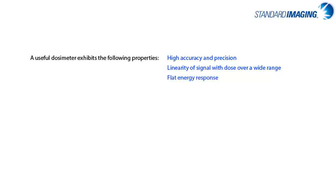A useful dosimeter with respect to medical physics applications exhibits the following properties: high accuracy and precision — note that these two terms are not the same — linearity of signal with dose over a wide range, a relatively flat energy response, small directional dependence, high spatial resolution, and a large dynamic range. Viewers are encouraged to review the IAEA slide sets, which discuss each of these properties in detail. This tutorial is focused on ion chamber and electrometer characteristics, with reference materials found at the end of this video.